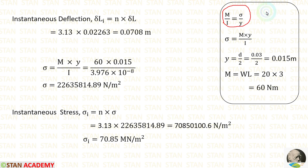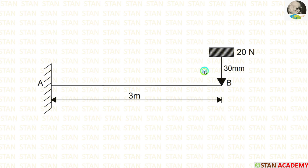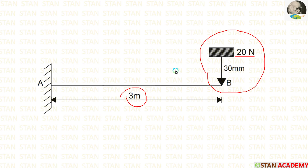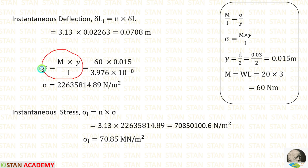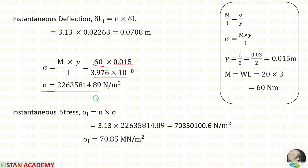We know the bending equation: M by I is equal to sigma by Y. Here we calculate M, the maximum moment in the beam. The load of 20 Newton is acting at the free end at a distance of 3 meter, so M equals 20 into 3, giving 60 Newton meter. Y equals diameter divided by 2: 0.03 by 2 equals 0.015 meter. Sigma equals M into Y by I. Applying M as 60, Y as 0.015, and the moment of inertia, we get sigma equal to 22,635,814.89 Newton per meter square.